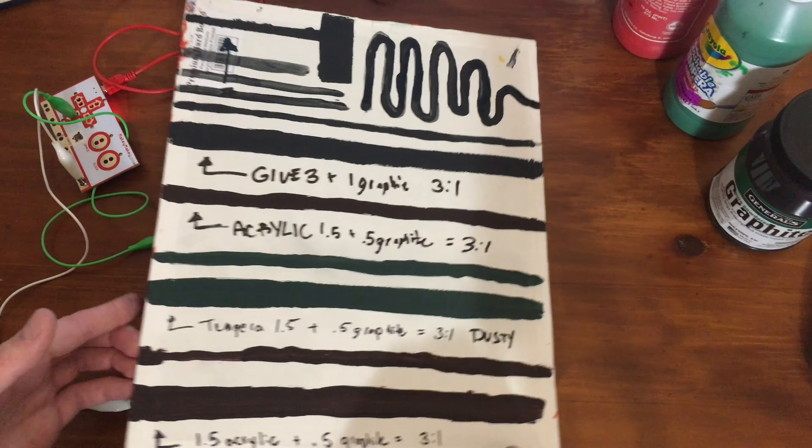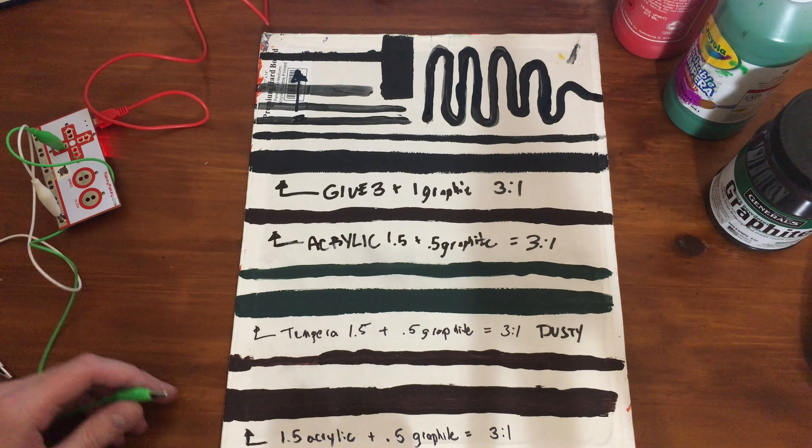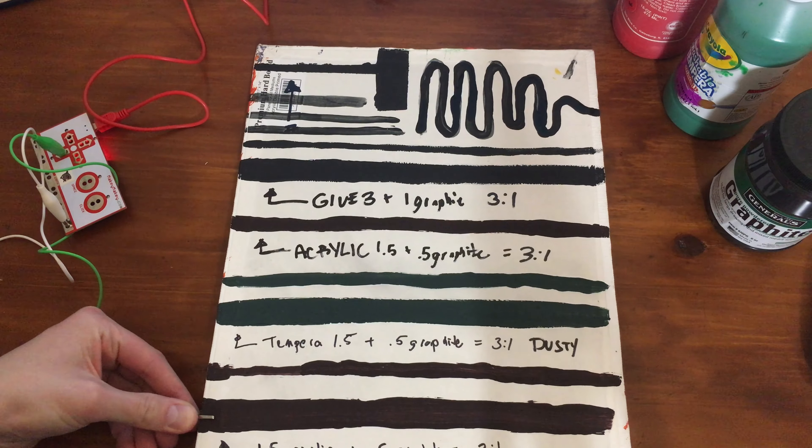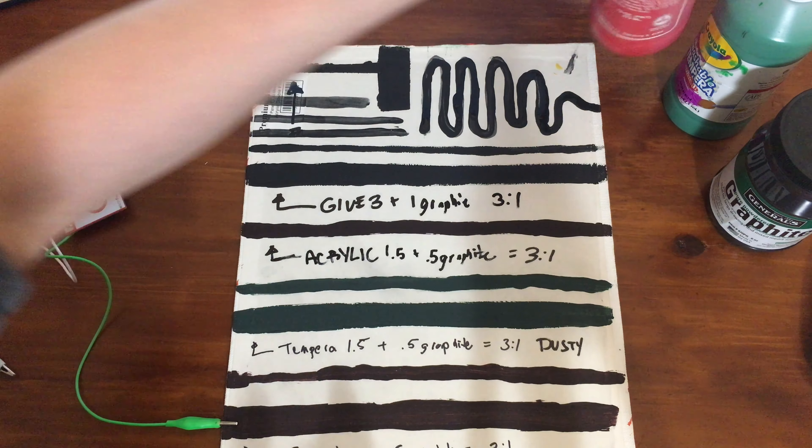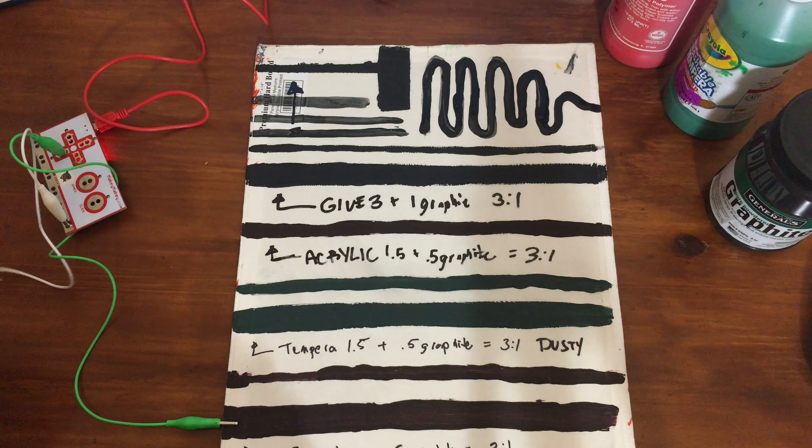So on the other side, I did more experiments. Down here I did acrylic three to one, so three grams of acrylic to one gram of graphite. I can test the circuit, circuit works.